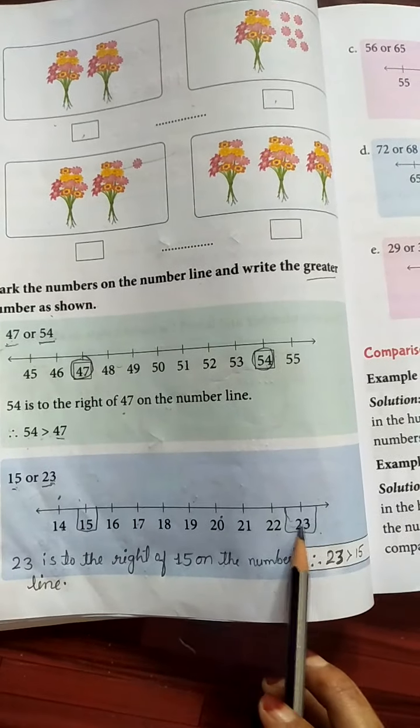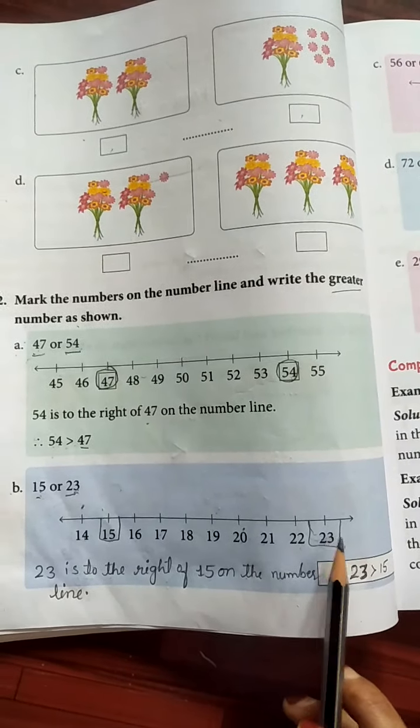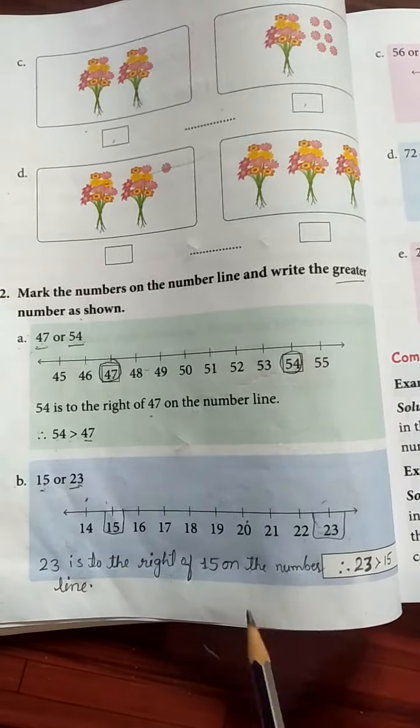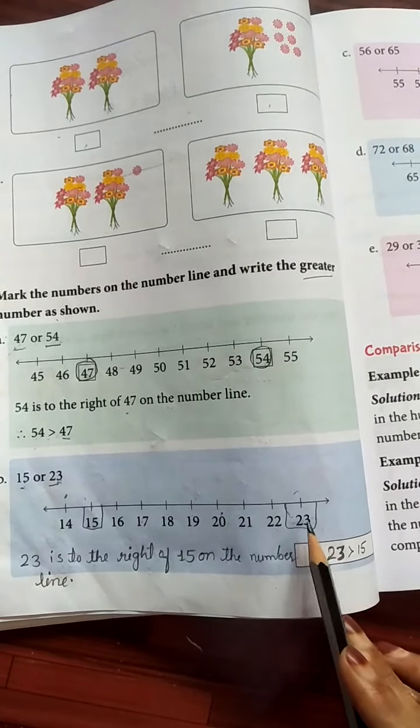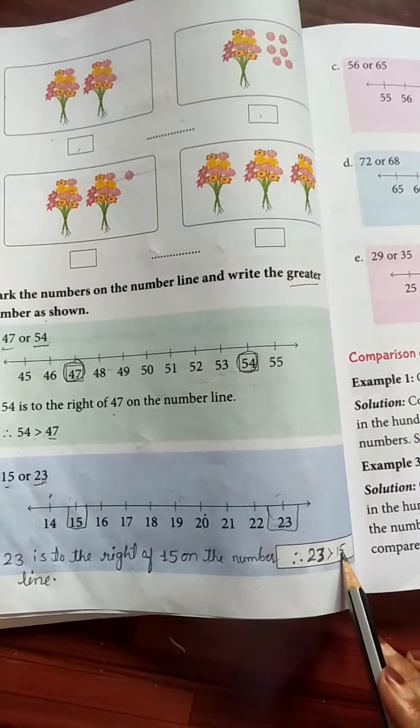So here 23 is to the right of 15 on the number line. See here, 23 is to the right of 15 on this number line. Therefore, 23 is greater than 15.